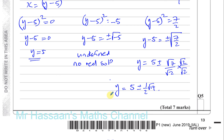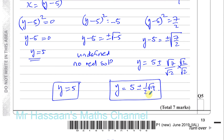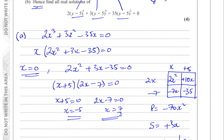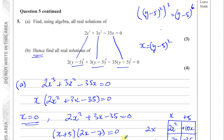The solutions are y equals 5 and y equals 5 plus or minus one half times root 14. Whenever you see 'hence', always look for the connection to the previous part. Even if it says 'hence or otherwise', using the previous result is normally easier — and here you have no choice anyway, since with brackets to the power of 6 any other approach would be very complicated.